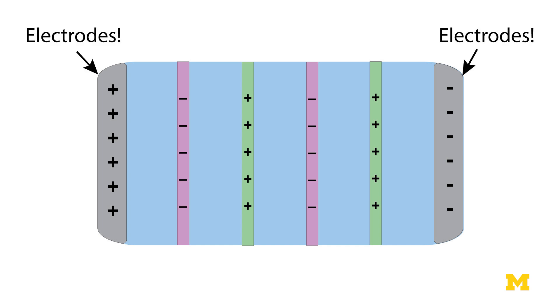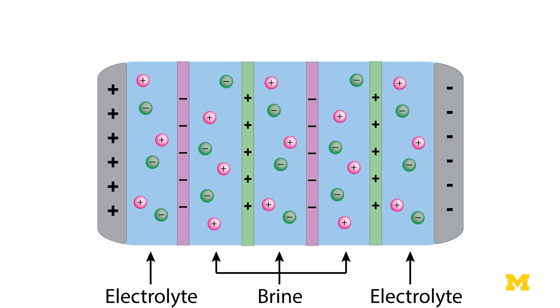In this device we have the reverse osmosis brine entering the device, and as soon as we apply the electric field across the electrodes, the positive charges or the cations will want to go towards the negatively charged electrode. They can easily go through the negatively charged membrane but they'll be mostly blocked by the positively charged membrane.